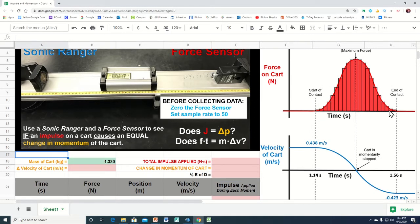This is going to be the graph that we're going to get from the force sensor. This is the graph we're going to get from the Sonic Ranger. So we start our collection of data and then about 1.14 seconds afterwards, the cart is going to collide into the spring. And this was the velocity it had just the moment it collided into the spring.